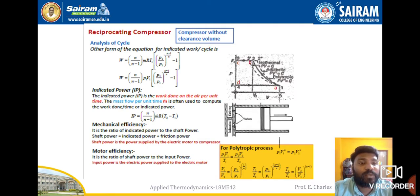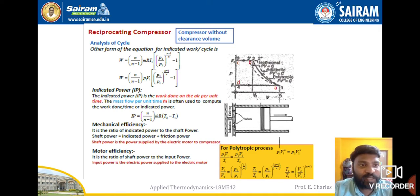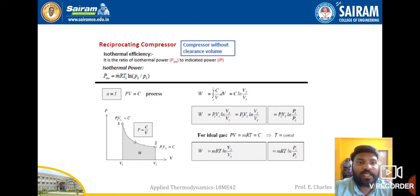T₂/T₁ = (V₂/V₁)^(n-1). This is easy to understand — you don't need to memorize all these equations. If you know the gas equation P₁V₁/T₁ = P₂V₂/T₂ and the polytropic equation P₁V₁ⁿ = P₂V₂ⁿ, you can derive everything easily. Next, for the compressor without clearance volume, isothermal efficiency is the ratio of isothermal power to indicated power.